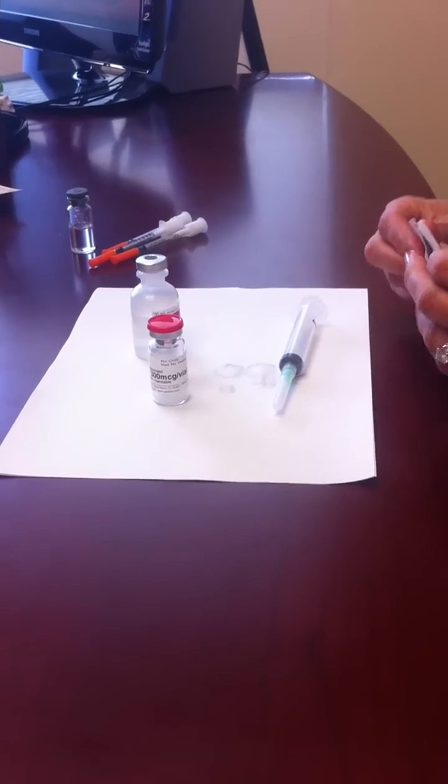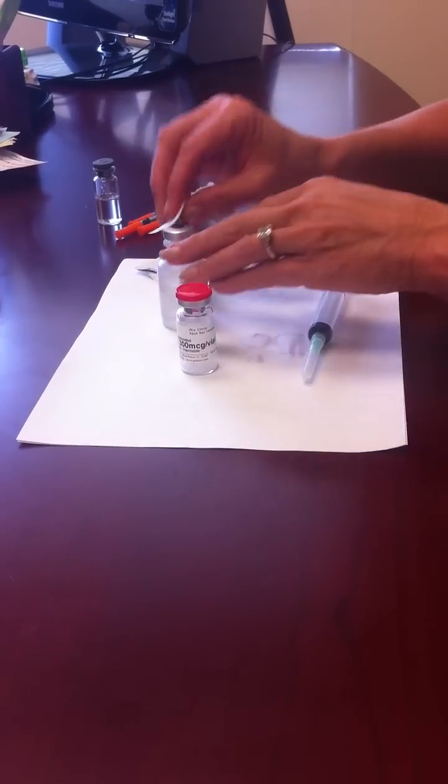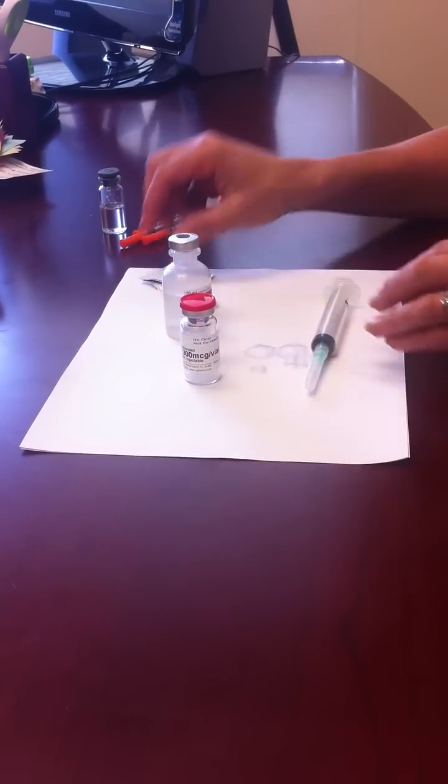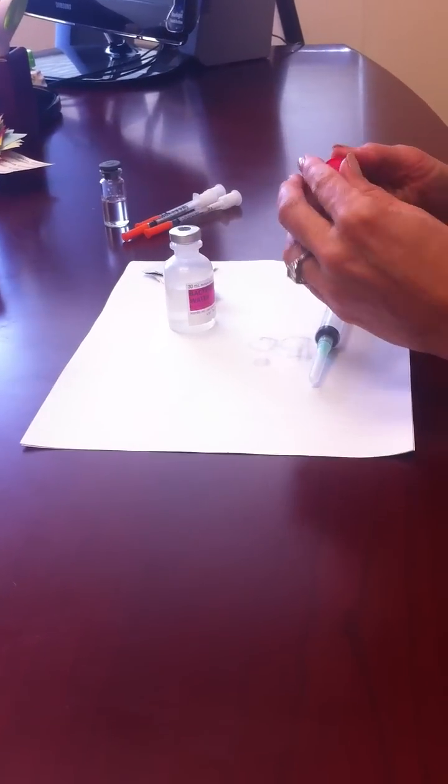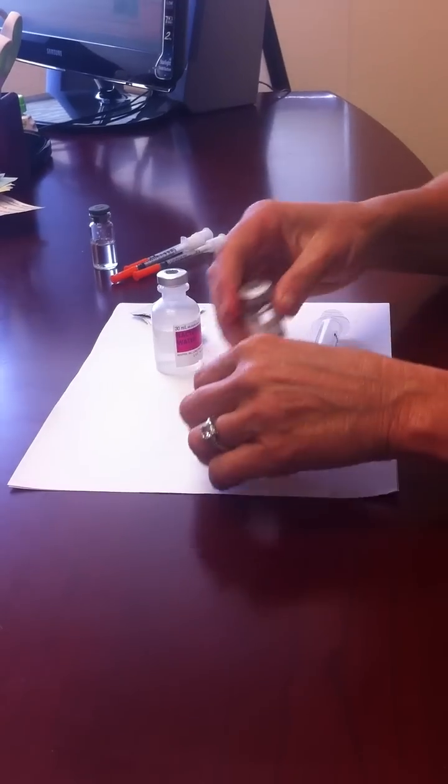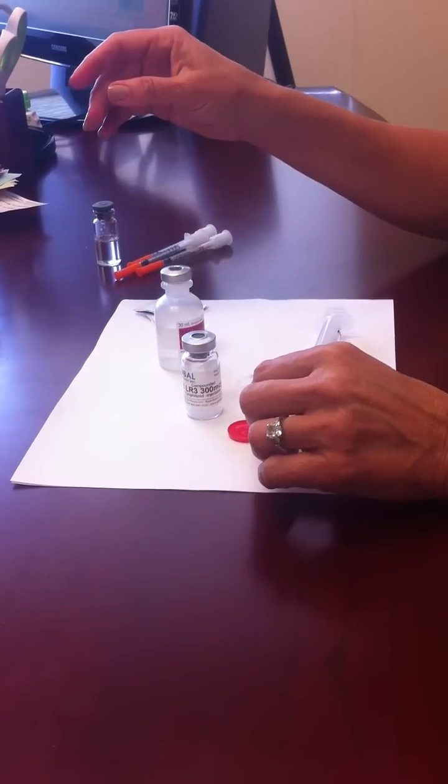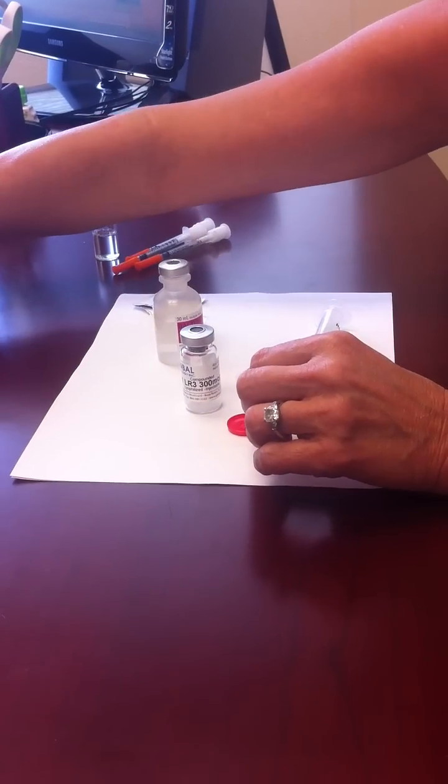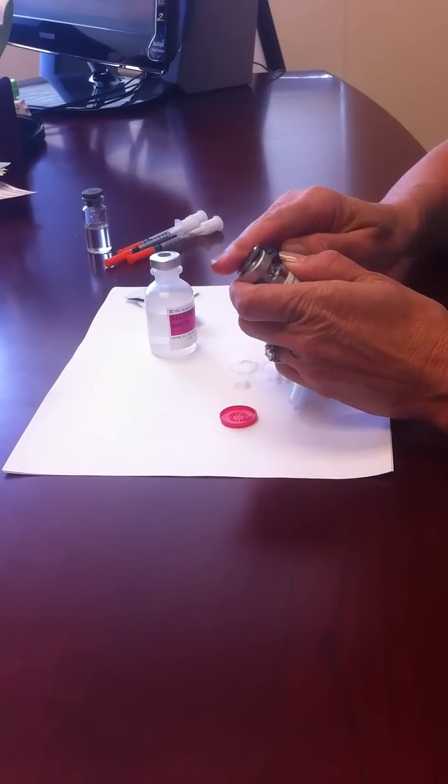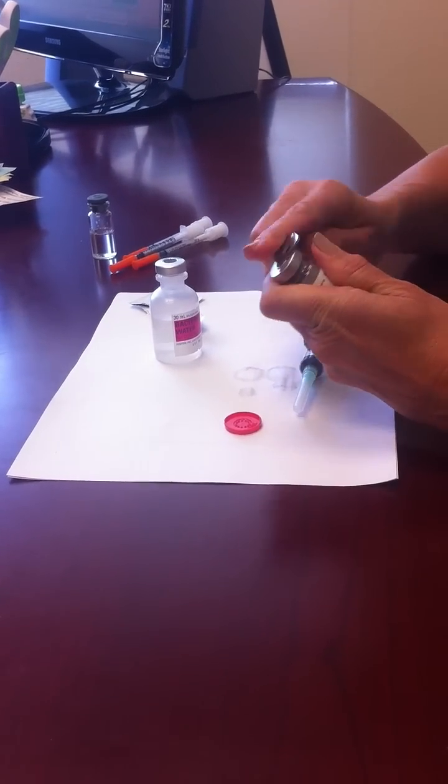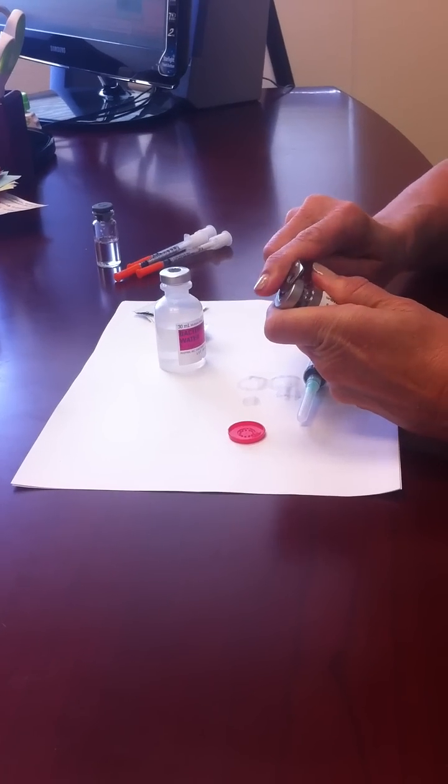Alright, so now we're going to reconstitute our IGF-1 LR3. We're going to remove the top, and you're going to want to remove this metal band that's around it, so you need one of these old fashioned little bottle openers.